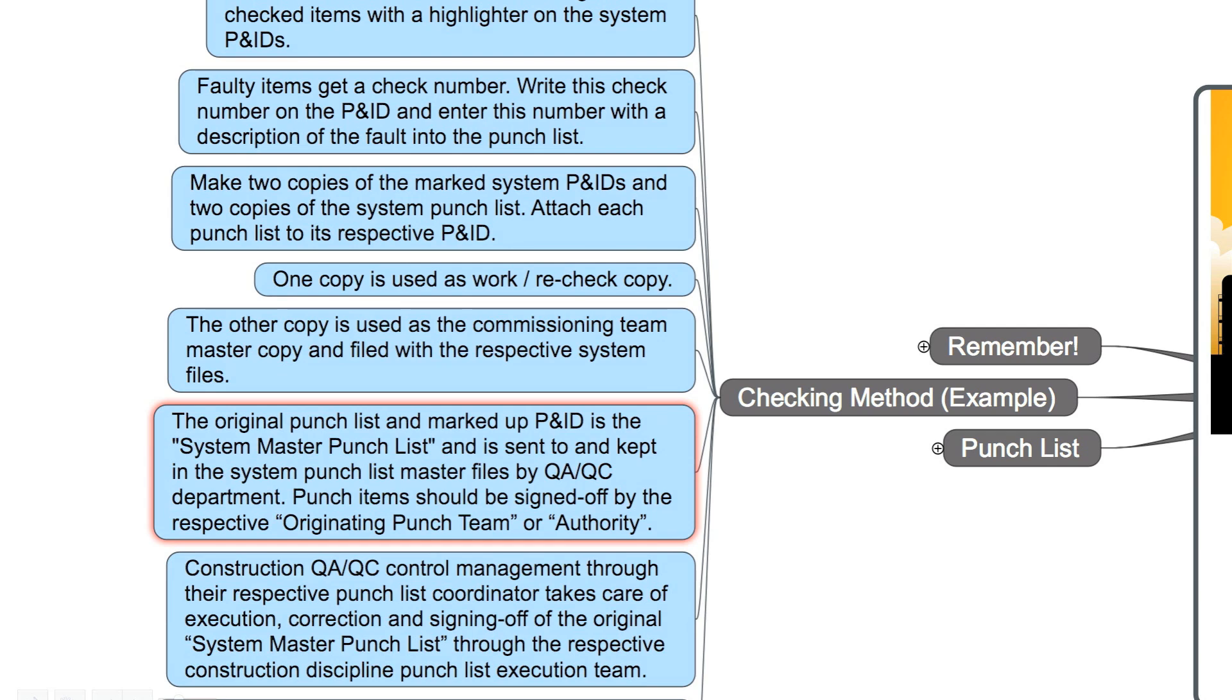The original punch list and marked up P&ID is the system master punch list and is sent to and kept in the system punch list master files by QA/QC department. Punch items should be signed off by the respective originating punch team or authority.